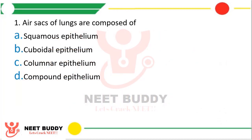Question number one: Air sacs of lungs are composed of — option A, squamous epithelium; option B, cuboidal epithelium; option C, columnar epithelium; option D, compound epithelium. The correct answer is option A, that is squamous epithelium.